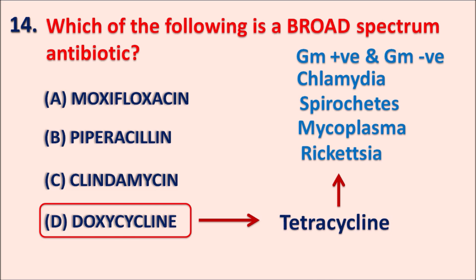Even though tetracyclines are broad spectrum antibiotics, in most infections they are developing resistance. We can also discuss ampicillin and amoxicillin, which are classified as extended spectrum penicillins — sometimes called broad spectrum, but their category is actually extended spectrum because their activity extends from gram-positive to gram-negative. However, they are not useful for other types of infections, so they are considered extended spectrum, not truly broad spectrum.